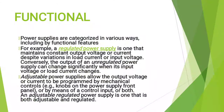Power supplies are categorized in various ways including by functional features. For example, a regulated power supply is one that maintains constant output voltage or current despite variations in load current or input voltage. Conversely, the output of an unregulated power supply can change significantly when its input voltage or load current changes.